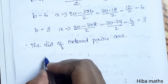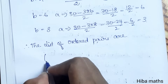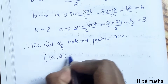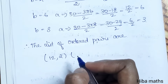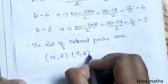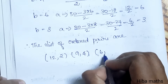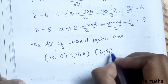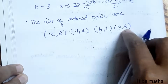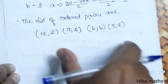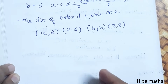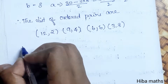The list of ordered pairs — using a as the first value and b as the second — is: (12, 2), (9, 4), (6, 6), and (3, 8). Using this list, we will now check whether the relation R is reflexive, symmetric, transitive, and equivalence.